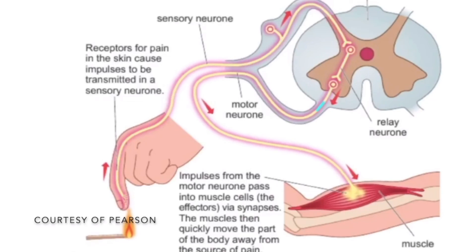Impulses from the motor neuron pass into the muscle cells, which are effectors, via synapses. The muscles then quickly move the part of the body away from the source of pain. This process did not require thinking and it was a faster way of neurotransmission thanks to the reflex arc — demonstrating the importance of the reflex arc.